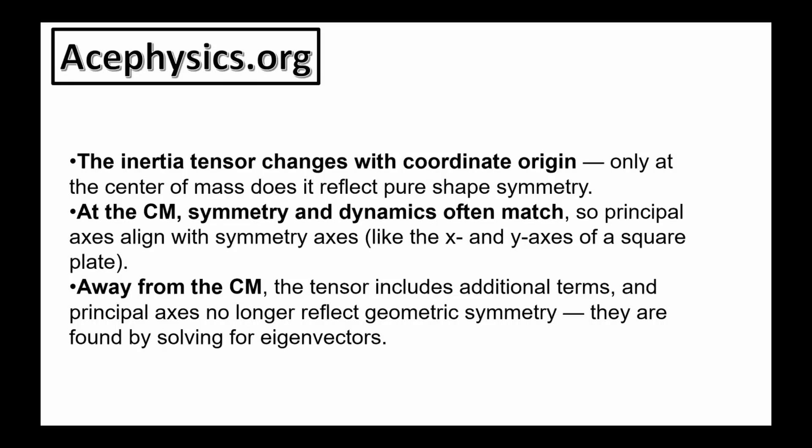Here are a few takeaway thoughts from this problem. The inertia tensor changes with coordinate origin. Only at the center of mass does it reflect pure shape symmetry. At the center of mass symmetry and dynamics often match so principal axes align with symmetry axes. Away from the center of mass the tensor includes additional terms and principal axes no longer reflect geometric symmetry. They are found by solving for eigenvectors.